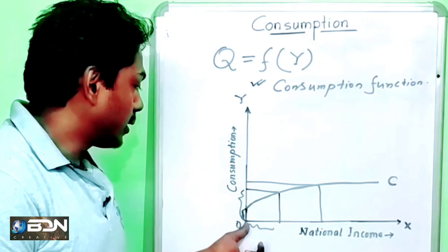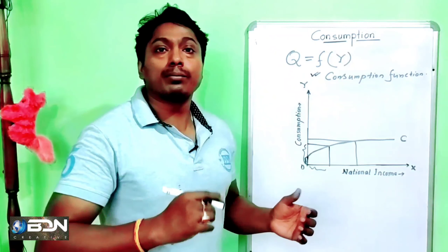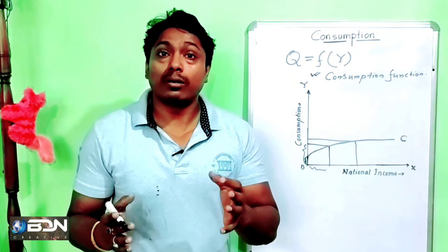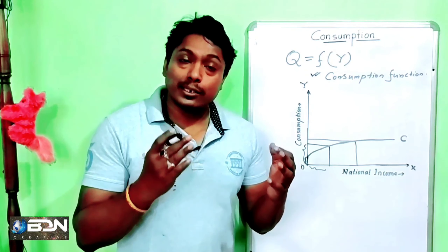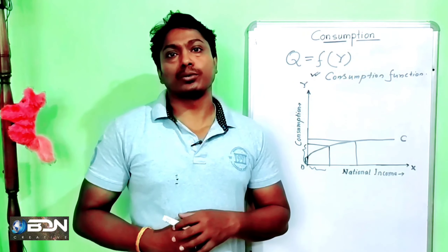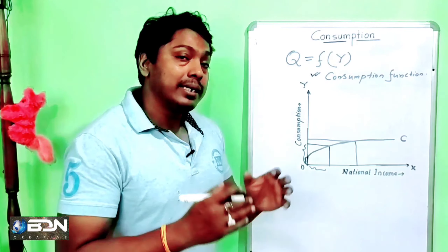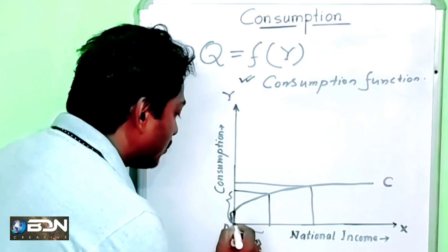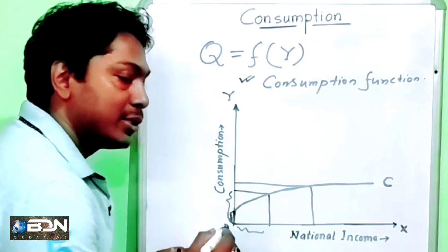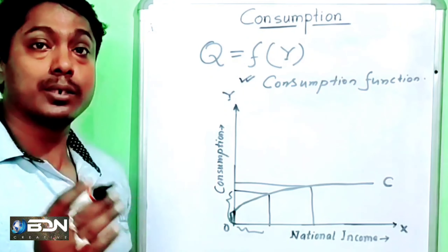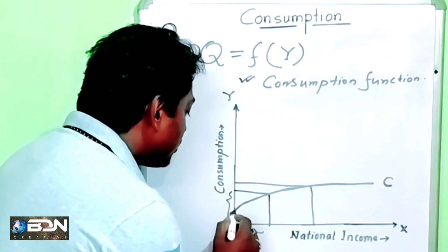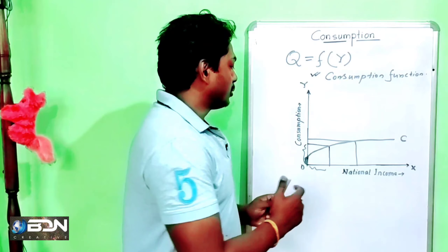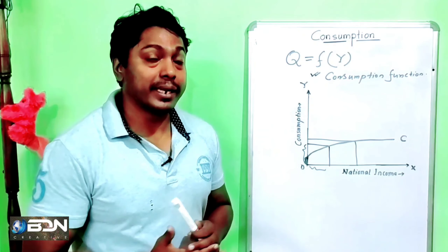There is a direct relationship between income and consumption, and the consumption curve is positively sloping. This represents a direct relationship between aggregate consumption and aggregate national income. When national income rises, consumption rises directly.